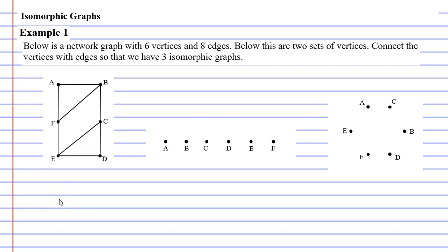In this video we're going to look at example 1. Below we have a network graph with 6 vertices and 8 edges and we have a set of vertices next to it. Basically what we want to do is have 3 isomorphic graphs and we're going to do that by connecting vertices with edges. Alright, let's get into this.